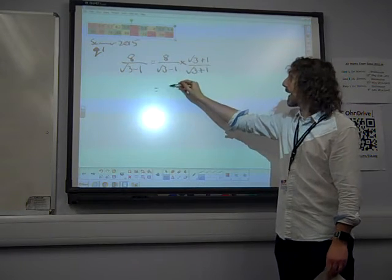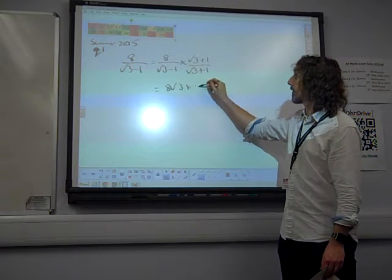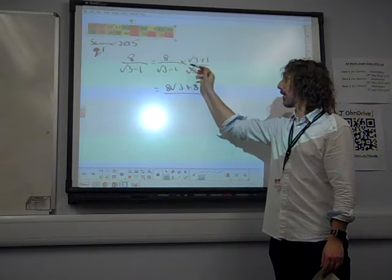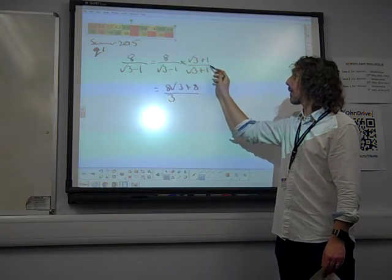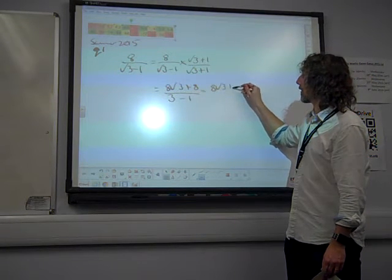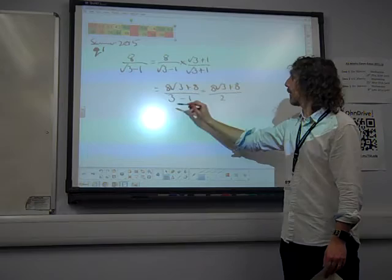So on the top line, we get 8 root 3 plus 8. And we multiply them. The bottom line is giving us root 3 times root 3. So that's 3 plus root 3 minus root 3. And then we've got minus 1.